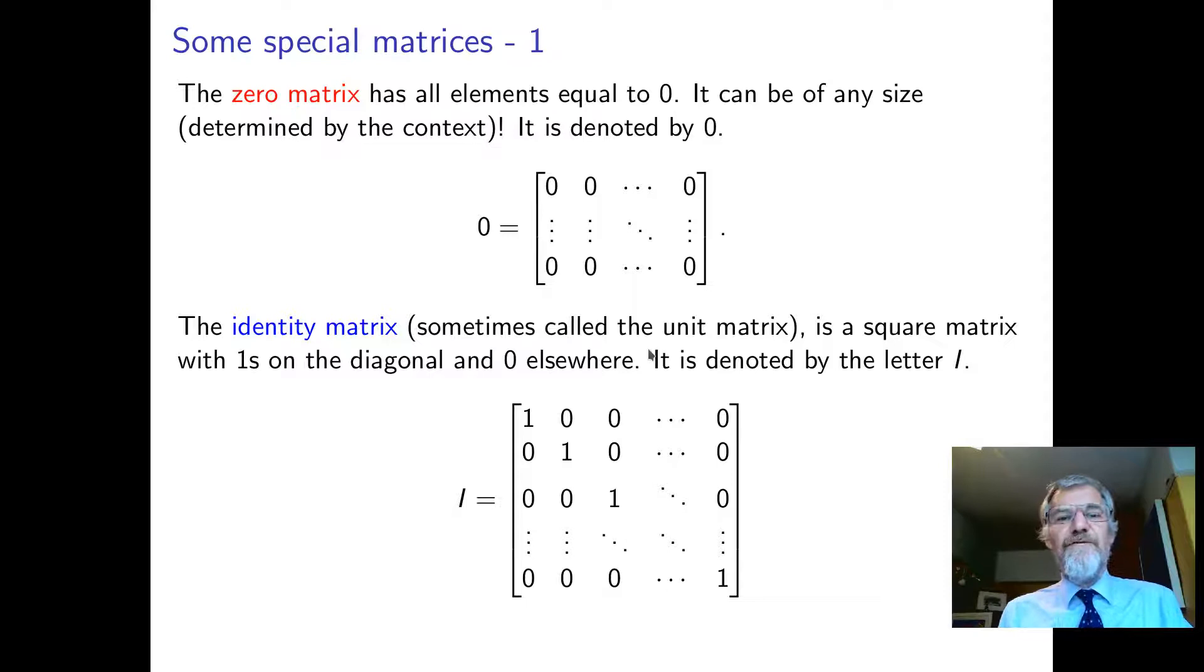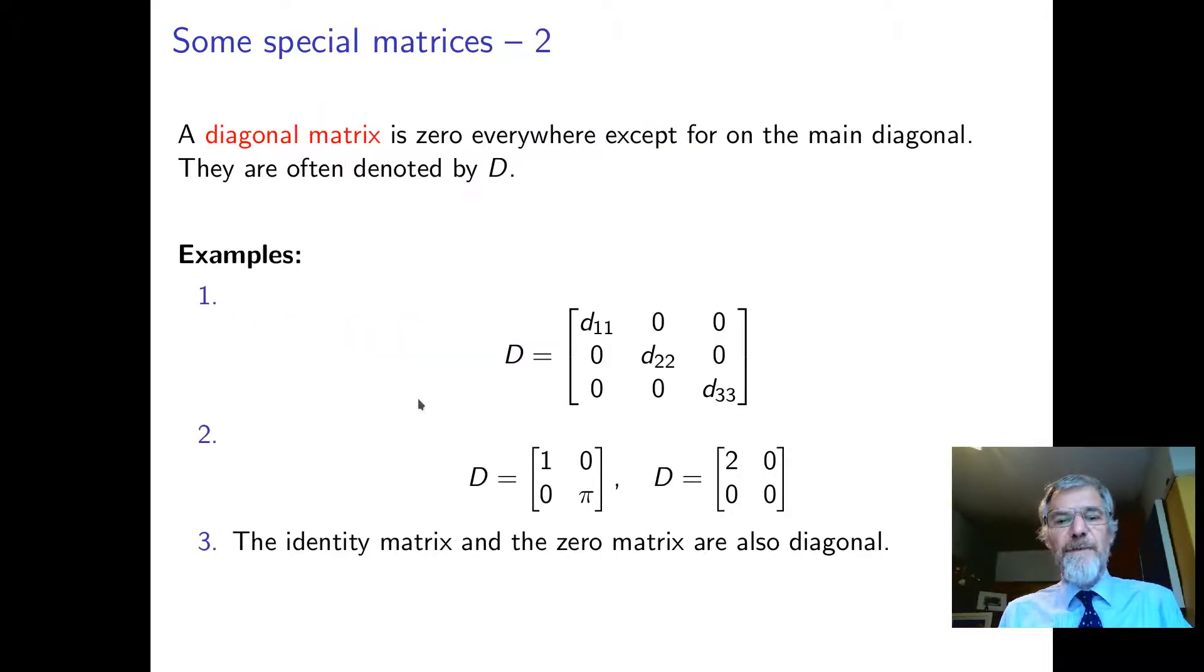Some special matrices. The zero matrix is just a matrix full of zeros. You can have any shape you like, any number of rows and columns. There's also a special matrix that really plays a role a little bit like one does for numbers. That's a square matrix with ones along this main diagonal and zeros elsewhere. It's denoted by the letter I, capital I.